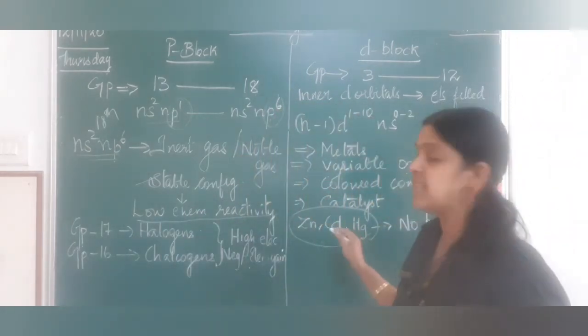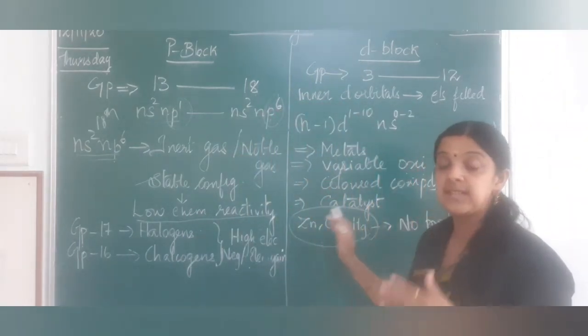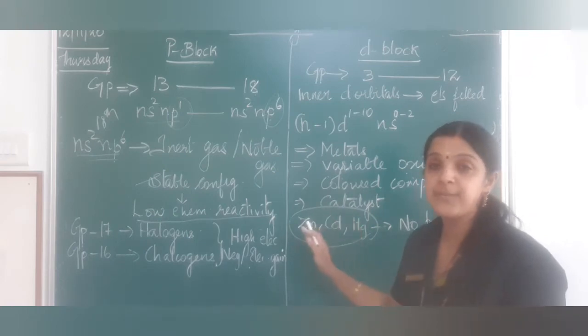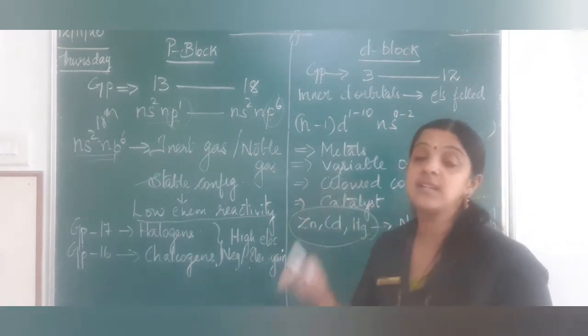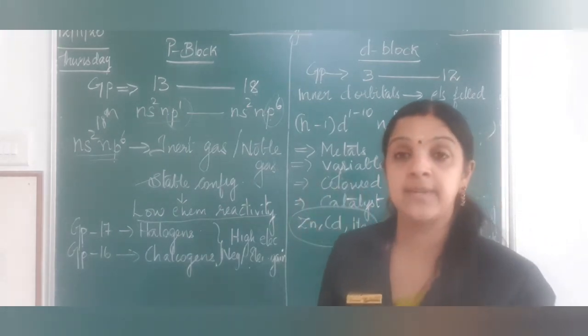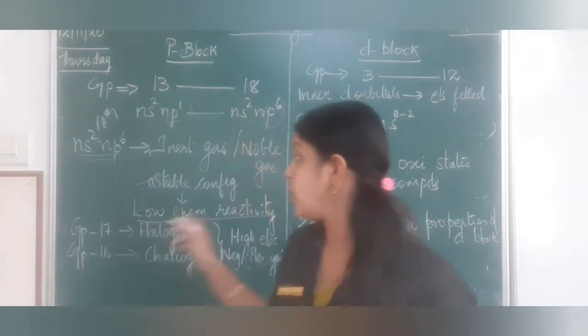Zinc, cadmium, and mercury are exceptions — their D subshell is completely filled (D10), so they never participate in chemical reactions. They are called exceptions compared to other D block transition elements.